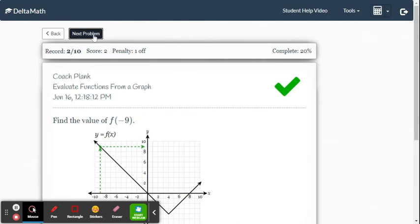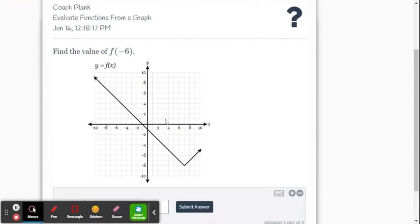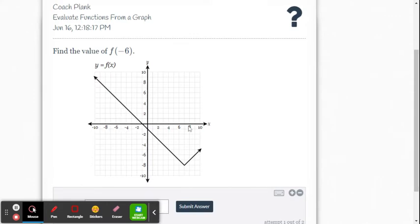Let's do another one. Find f of negative 6. All right. The input value of x is negative 6. y is 5.